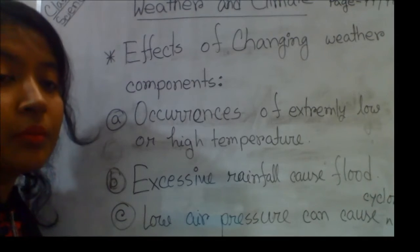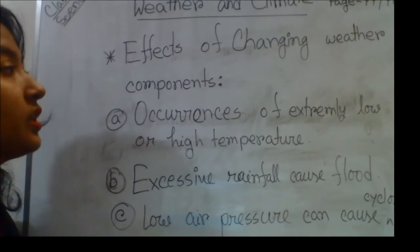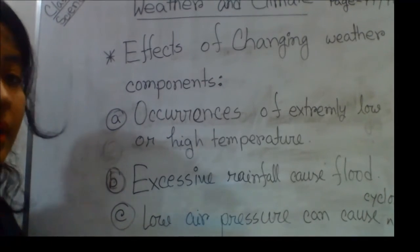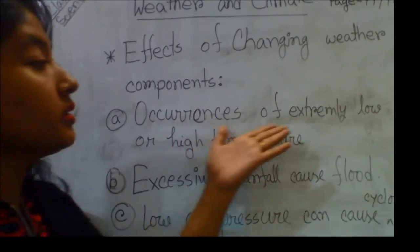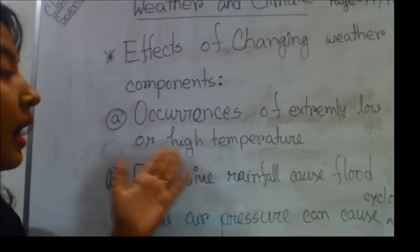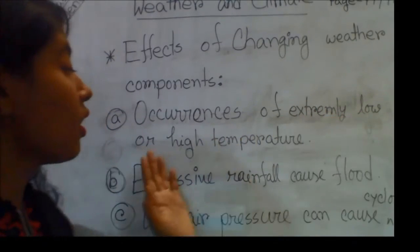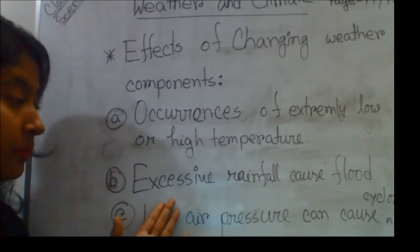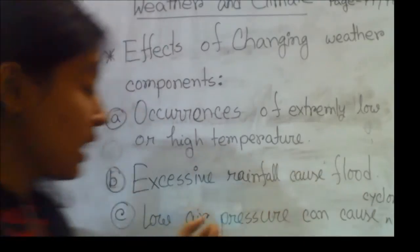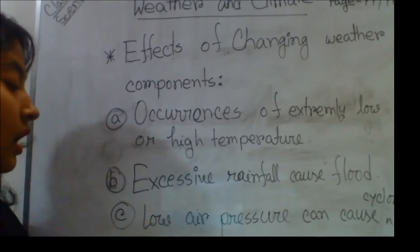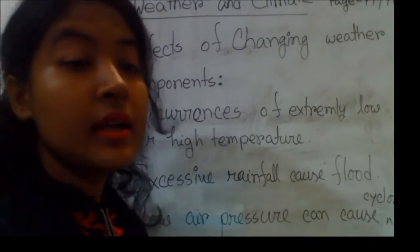These are the three points of changing weather components. I am telling it again that number A is occurrences of extremely low or high temperature. Number B is excessive rainfall can cause flood. And number C is low air pressure can cause cyclone.